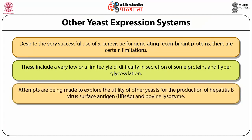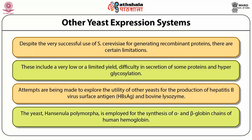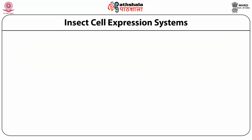Attempts are being made to explore the utility of other yeasts for the production of hepatitis B virus surface antigens and bovine lysozymes. The yeast Hansinola polymorpha is employed for the synthesis of alpha and beta globin chains of hemoglobin.